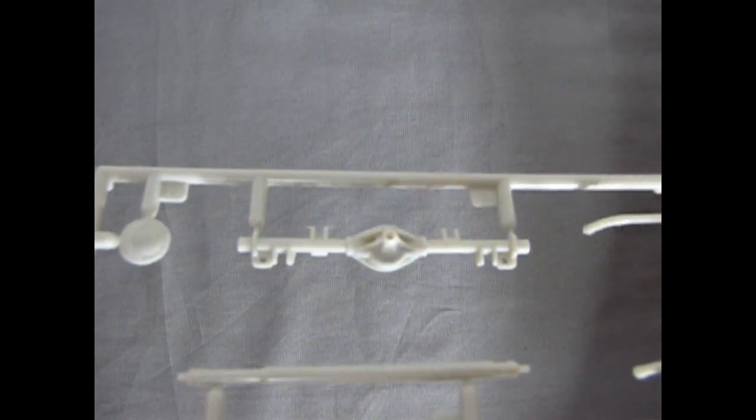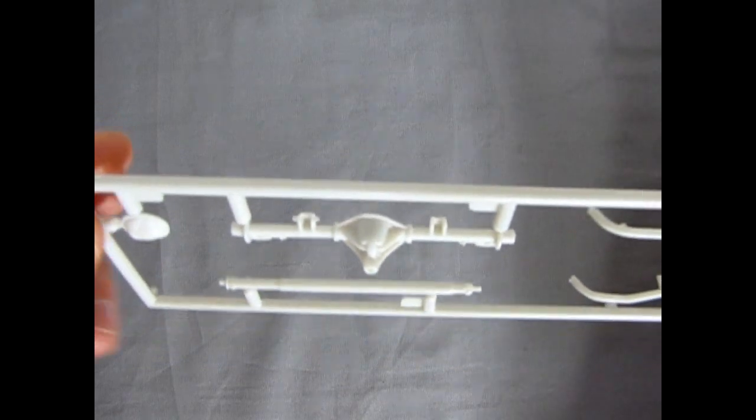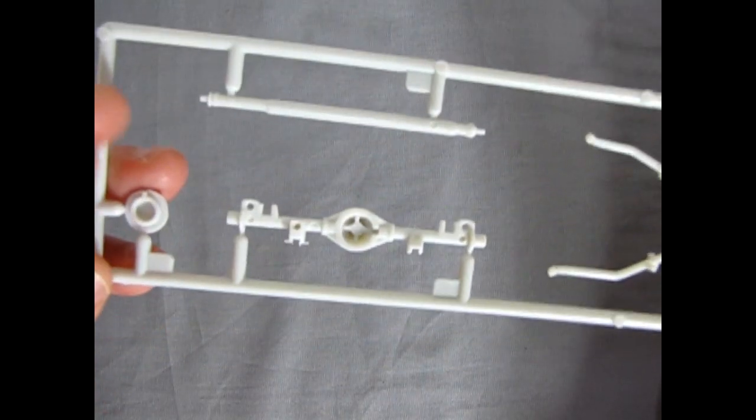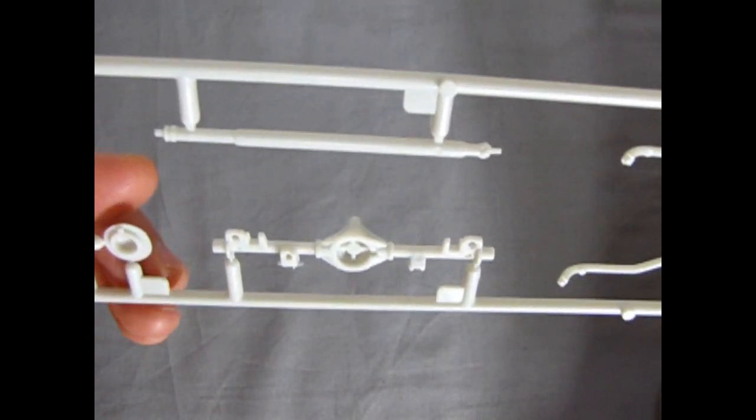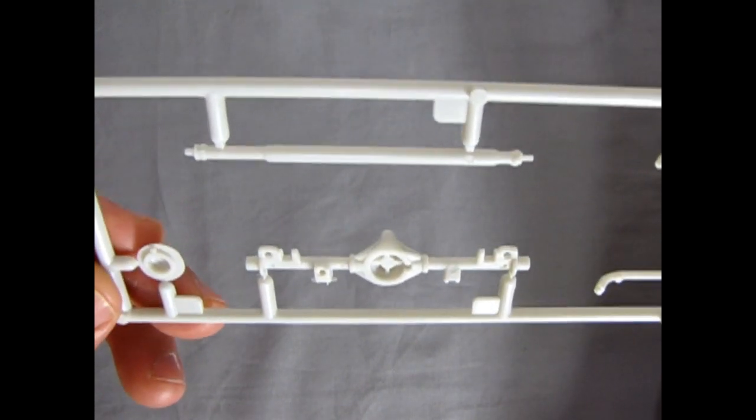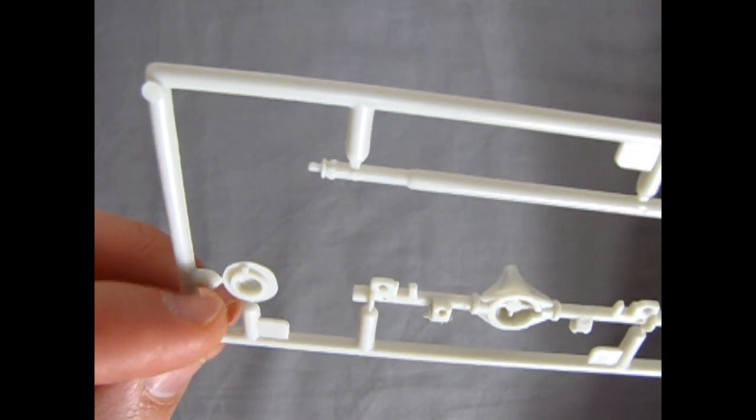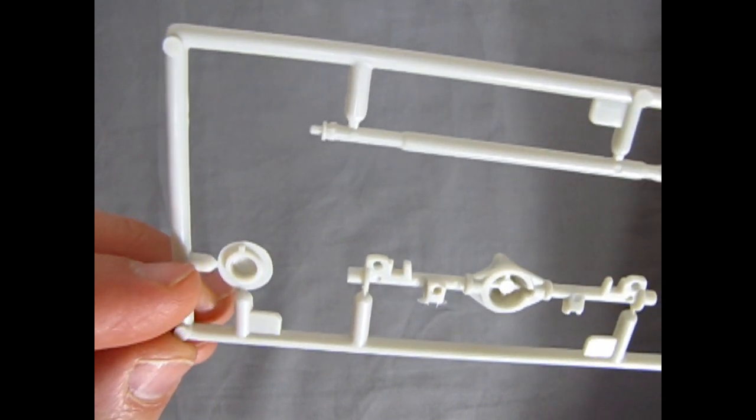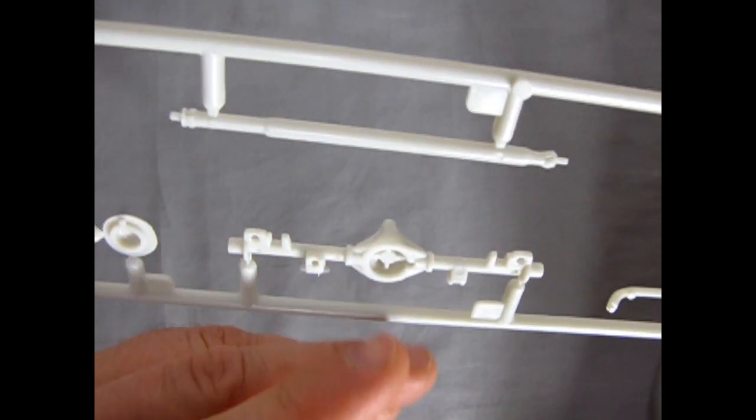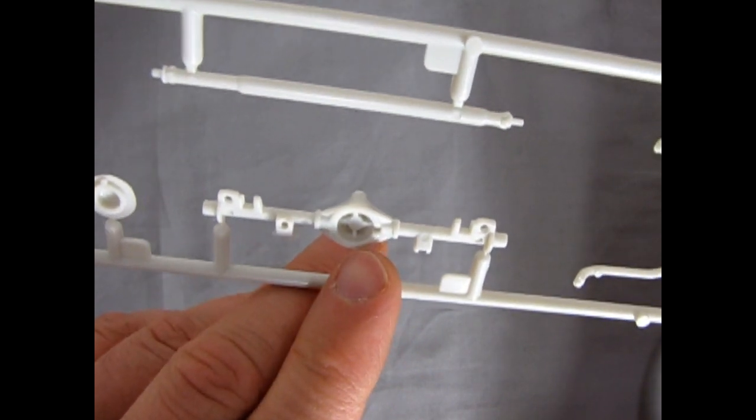You can see the nice detail on that differential. Just like the real one from GM. A bunch of holes in the back for lining all the spring and anti-sway bar components. As well as it's got a little notch on there for the back of the cover so that you know which way it's supposed to go. And there's the notch there.